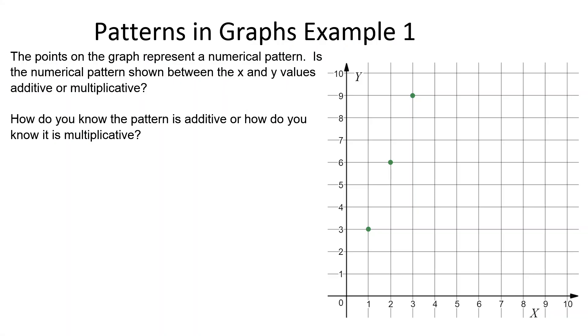Let's take a look at our three points of importance. Our first point is 1, 3. The x value is 1, the y value is 3. Our second point is 2 comma 6, and our third point is 3 comma 9.